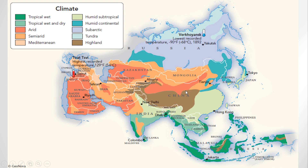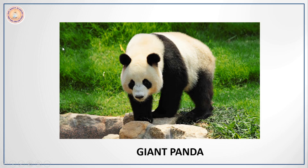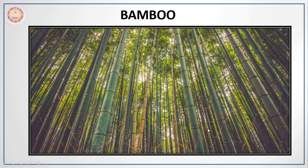Since this area lies in this part of China and the climate is very good, most of the vegetation has actually disappeared. However, as far as wildlife is concerned, the giant panda is a very rare animal but it is found here because of the presence of large amounts of bamboo forest.